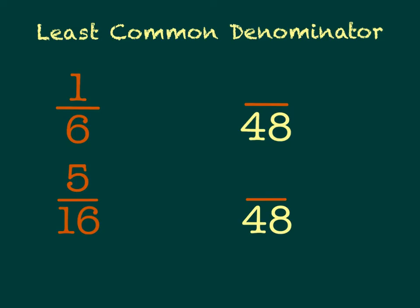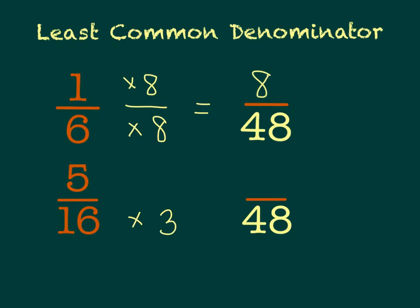However, if I had just multiplied 6 by 16, I would have gotten a product of 96, which is a lot greater than the least common denominator of 48. Since we typically find the least common denominator when changing fractions, I'll do that here. To change 1 sixth into a new equivalent fraction with 48 as the denominator, I need the factor that multiplies 6 to get 48 — that factor is 8. So 1 times 8 gives me a new numerator of 8. For 5 sixteenths, I multiply 16 by 3 to get 48, and 5 times 3 gives me a new numerator of 15. This gives me two new equivalent fractions ready to be added or subtracted.